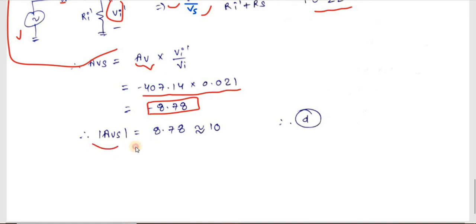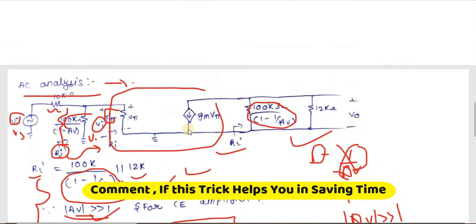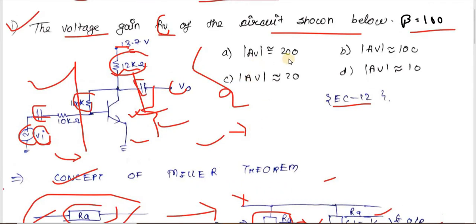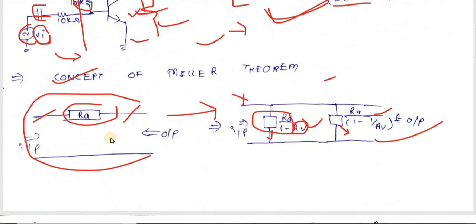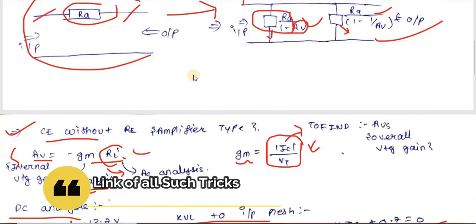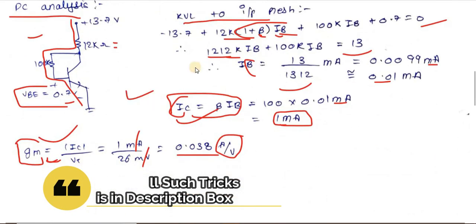The overall voltage gain = Av × (Vi'/Vi) = −407.14 × 0.021 ≈ −8.78. Taking the magnitude, |Av| ≈ 8.78, which is nearly equal to 10. The correct answer is |Av| ≈ 10. That's all about Miller's theorem for today — thank you!